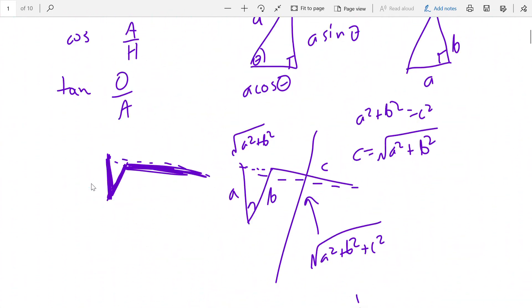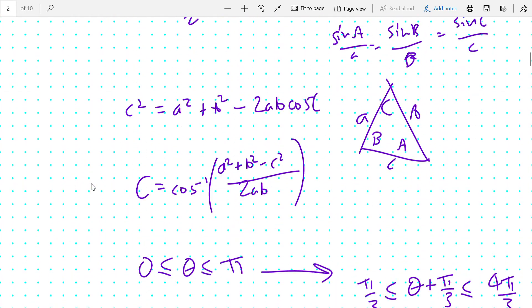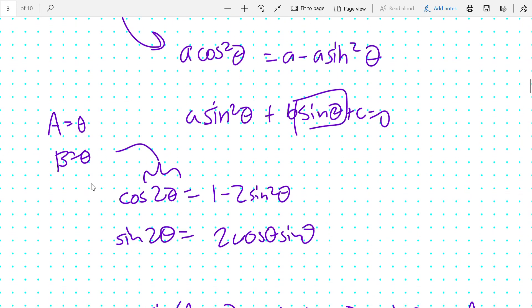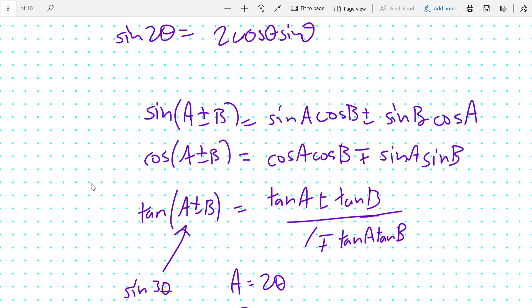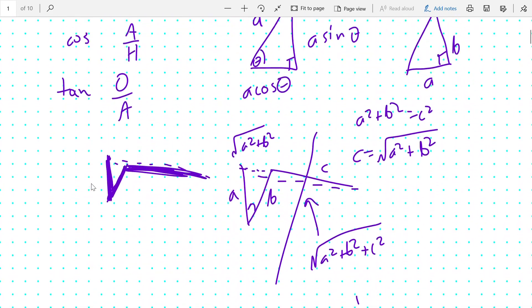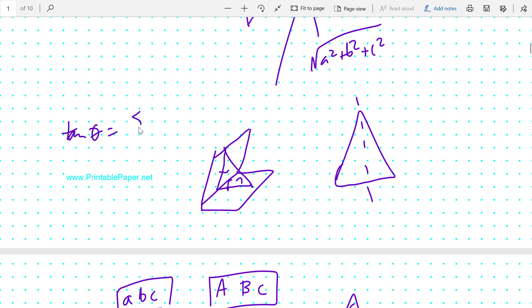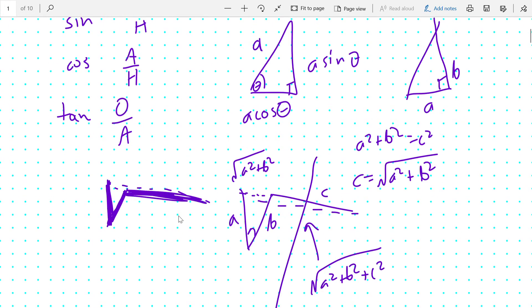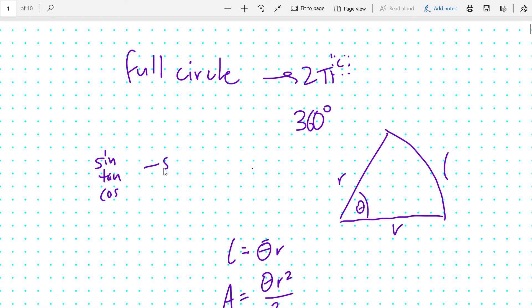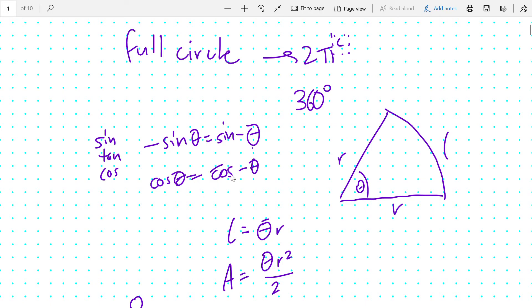And that is basically it. That is the vast majority of content that you need to know for trigonometry questions on the exam. There are other types of questions which may involve stuff like calculus, but that's not being covered in this course. Additionally, it may be useful to know the identity that tan θ = sin θ / cos θ, as well as tan²θ = sin²θ / cos²θ. And finally, that -sin θ = sin(-θ), as well as cos θ = cos(-θ), because they are rotationally symmetric and regular symmetric functions, respectively.